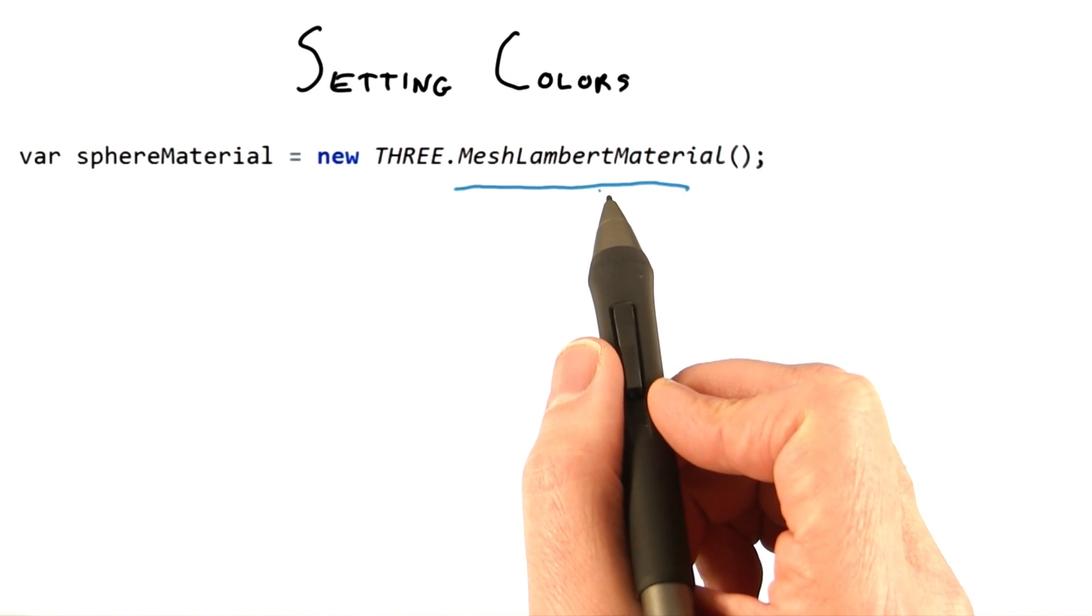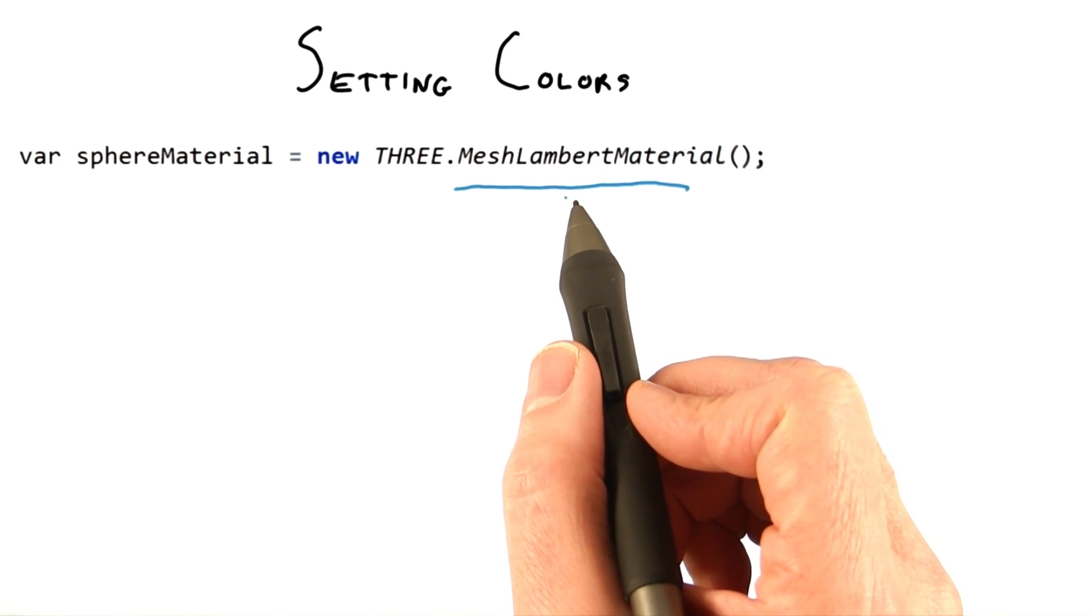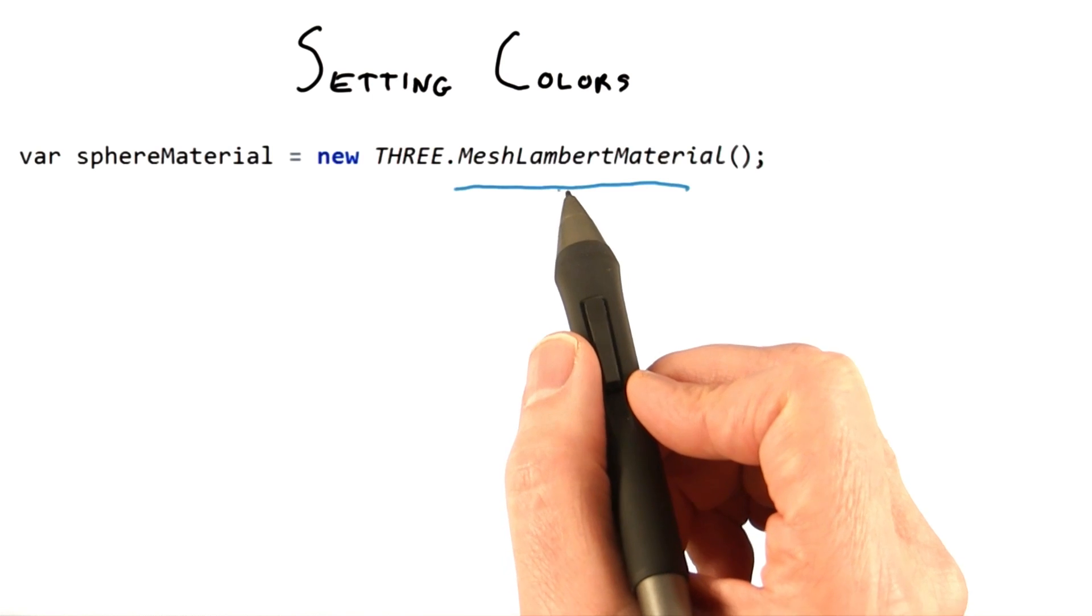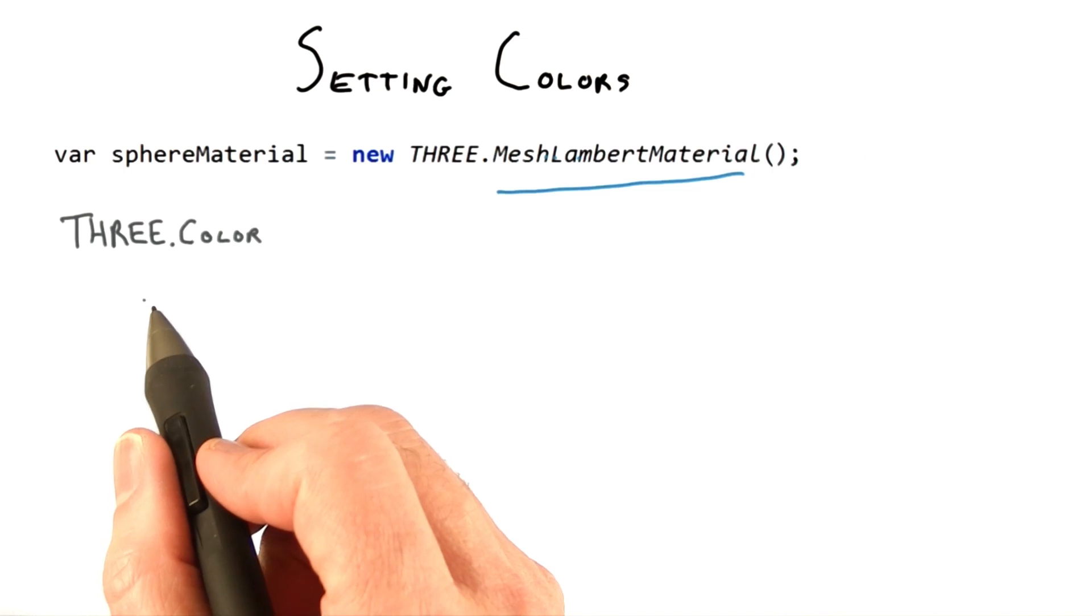The mesh Lambert material object that you've just created has several different parameters. These can be set when you first create the object or later in a number of different ways. One of these parameters is the material's color. This parameter is of type 3 color, and you can use all the methods associated with it.